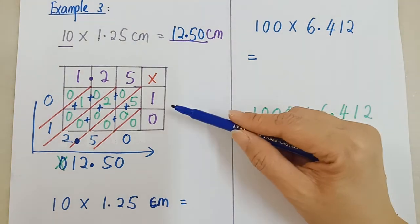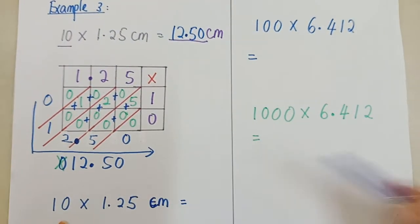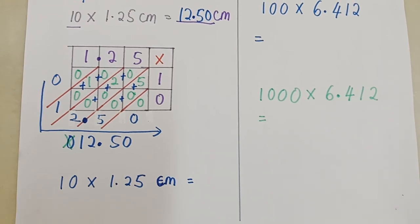Sebenarnya, selain bentuk latis ataupun bentuk lazim, kalau times dengan 10, kita ada cara yang lebih cepat. Yang lebih mudah. Iaitu, kita buat pergerakan titik perpuluhan. We move the decimal point. If times, kalau times, kita bergerak ke sini. Sebab jawapan selepas times ni akan lebih besar daripada 1.25. Jawapan sini akan jadi lebih besar. Jadi, kita kena bergerak ke kanan. Move the decimal point to the right side.